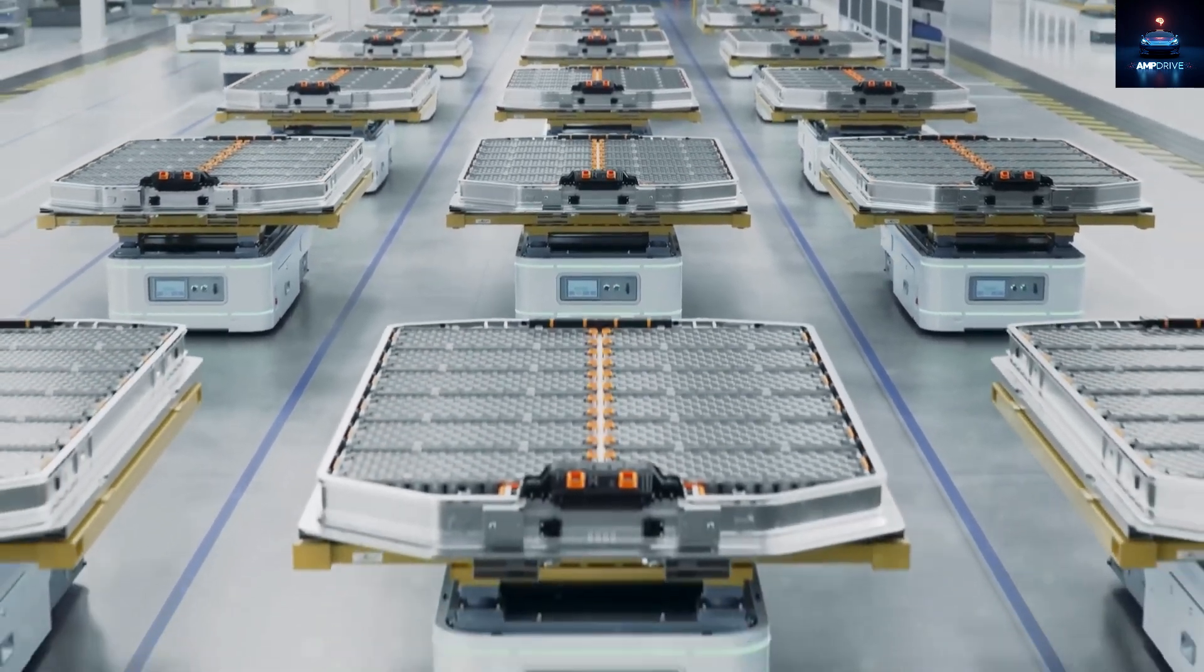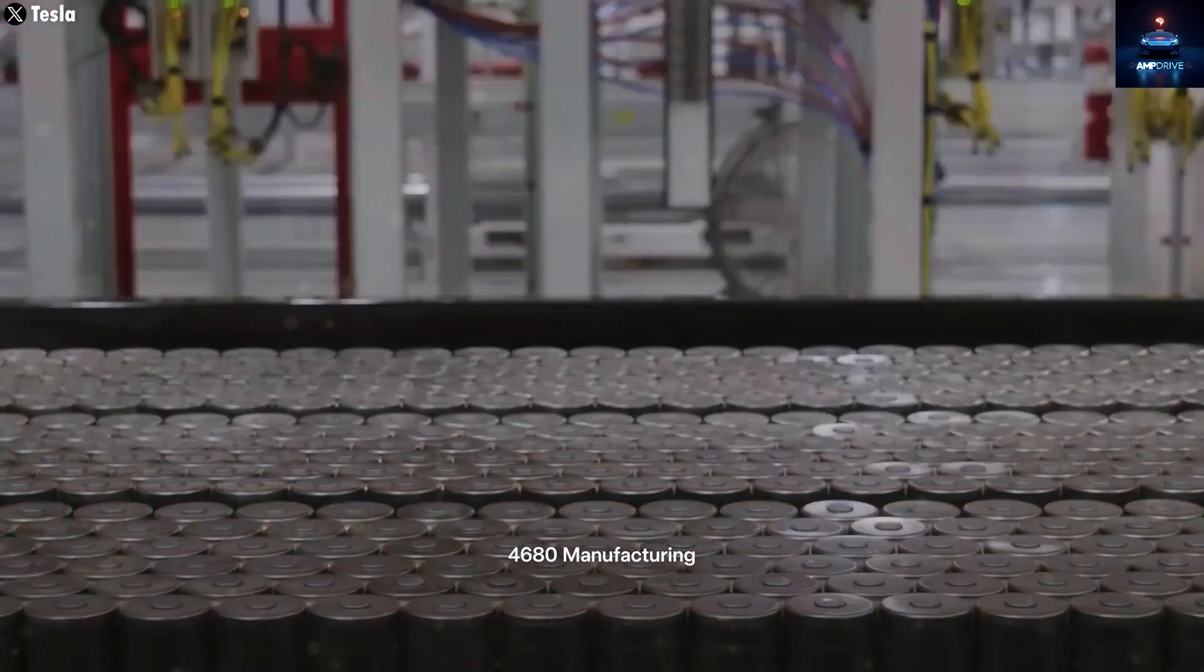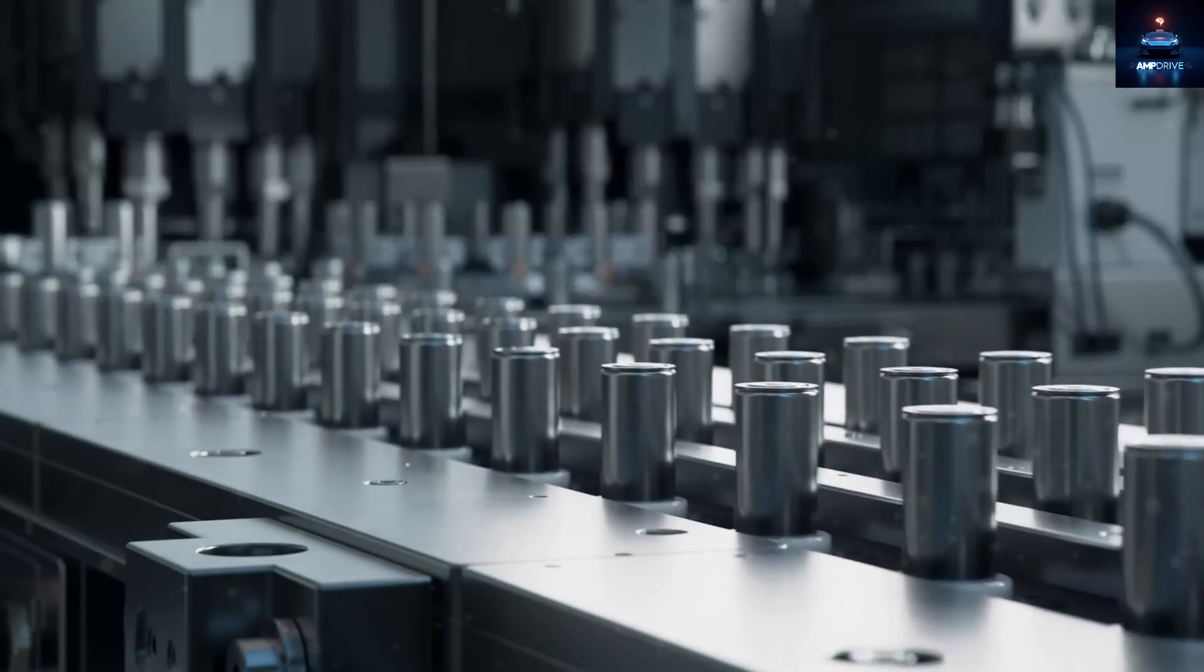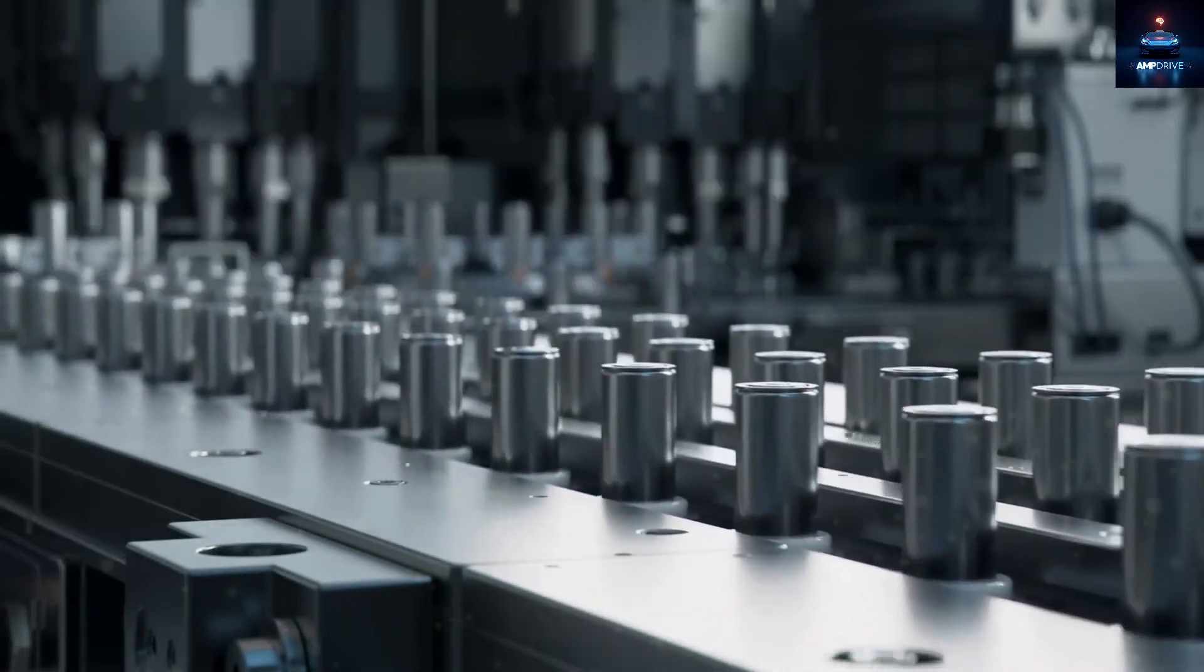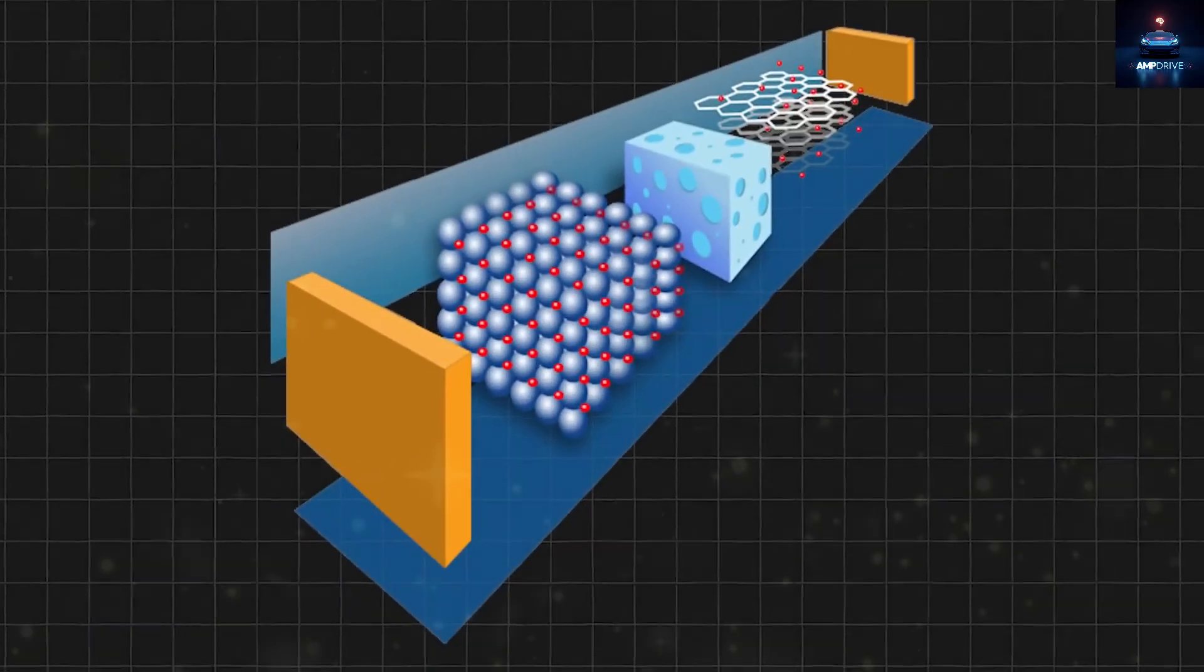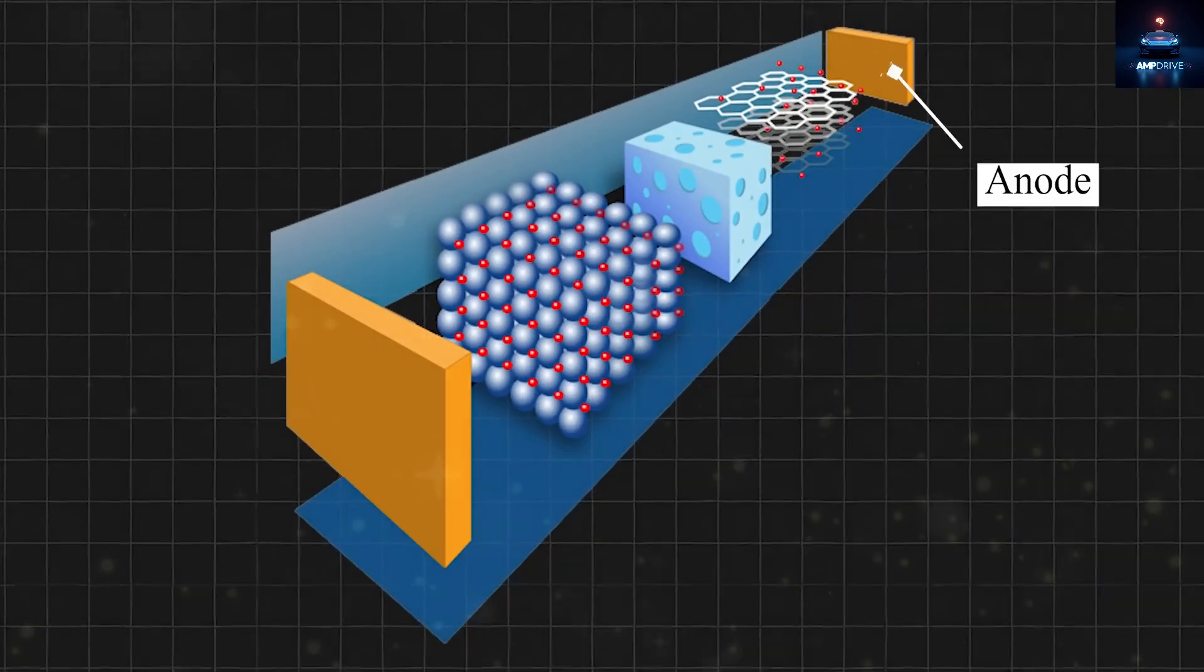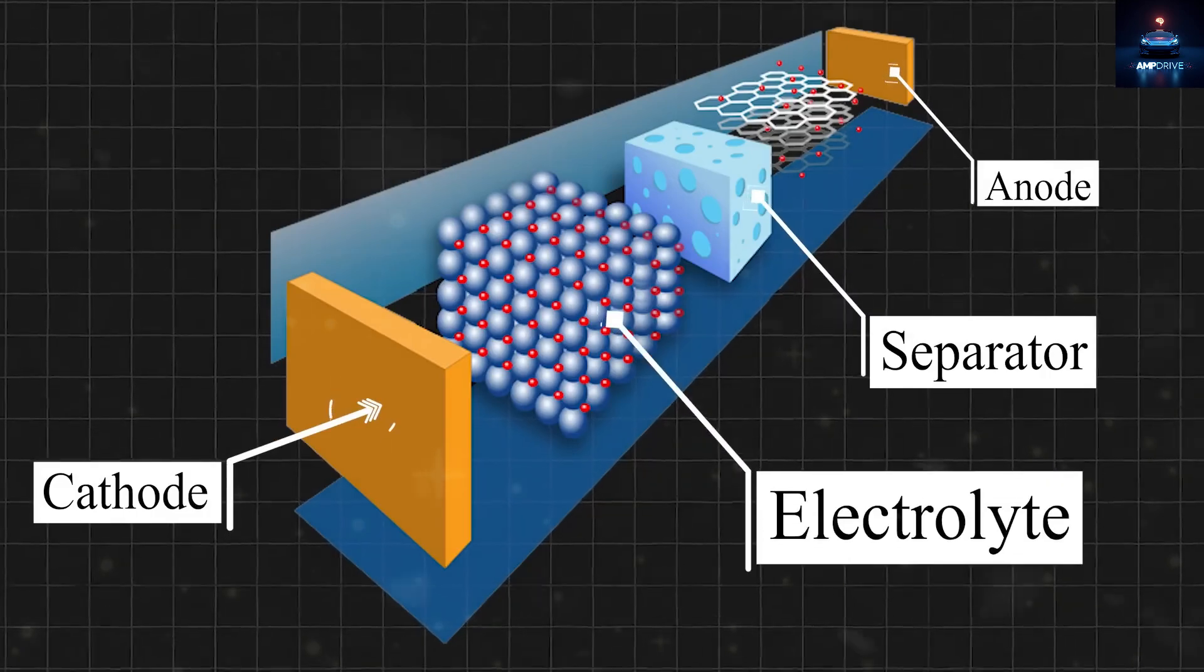Companies like Samsung, Solid Power, and QuantumScape are all making progress in solid-state battery development, and Toyota's solid-state battery is no exception. To better understand this rivalry, it's useful to break down the basic design of both battery types. All electric vehicle batteries are made up of four main parts: an anode, a cathode, an electrolyte, and a separator.